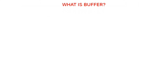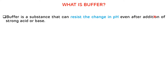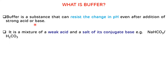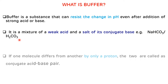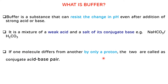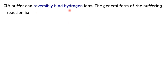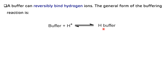A buffer is a substance that can resist a change in pH even after addition of a strong acid or base. It is a mixture of a weak acid and a salt of its conjugate base — for example, NaHCO3 and carbonic acid. If one molecule differs from another by only a proton, the two are called a conjugate acid-base pair. Buffers can reversibly bind hydrogen ions: when H+ concentration is high, there is a shift to the right forming the weak acid; when H+ is low, a shift to the left occurs.